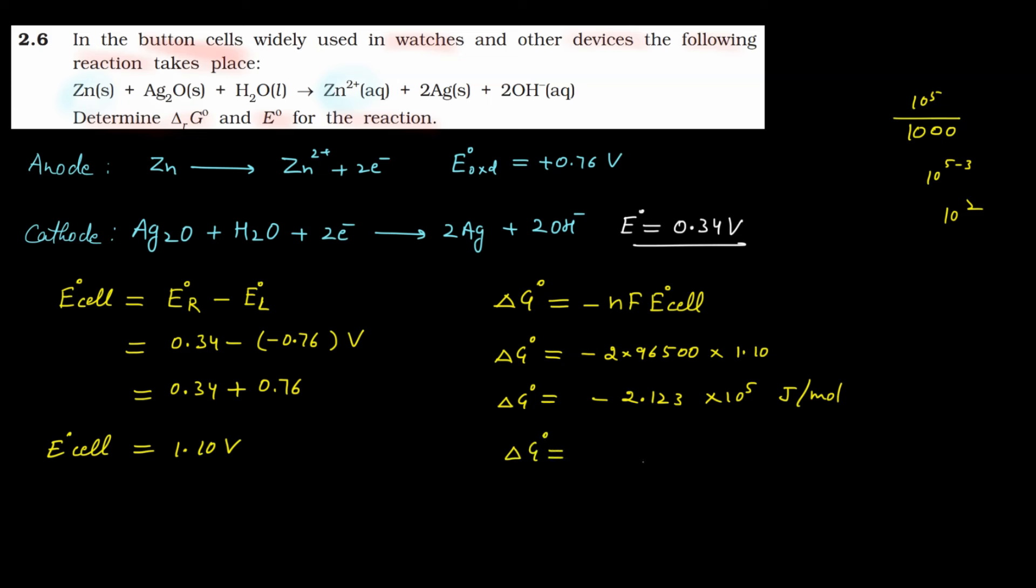So we'll write delta G° equals minus 212.3 kilojoule per mole. I multiplied by 10² here. So one answer you have is this and another answer is this. Question understood? See you in the next question. Bye bye.